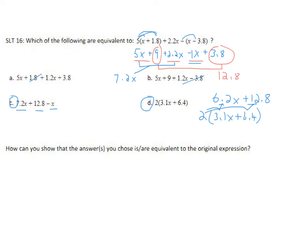How can you show that the answers are equivalent to the original expression? We did it algebraically by simplifying and combining like terms. You can also take a value of x — I often use x equals 0 because it's easy to work with — put it into the original equation and into your answers and see if you get the same number.